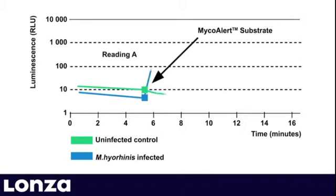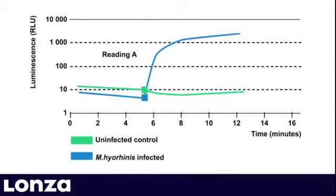Then MycoAlert substrate is added. In the presence of mycoplasma, additionally generated ATP leads to higher light values for the second read. The ratio of read B to A is indicative of the presence or absence of mycoplasma.